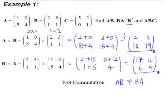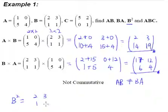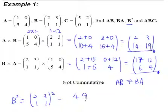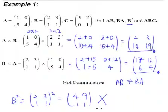Let's move on to B squared. I have seen students do this before: since B is the matrix 2, 3, 1, 1, they think that B squared means squaring every element — so 2 squared gives 4, 3 squared gives 9, and so on. This is wrong — in fact, very, very wrong. Please don't ever make this mistake.